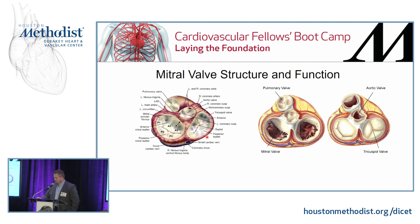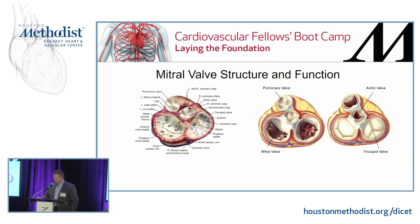This busy slide labels all the anatomy of the mitral, tricuspid, aortic, and pulmonic valves. It shows the names of the cusps of the anterior and posterior leaflets of the mitral valve and their location in the heart: anterolateral commissure, posteromedial commissure, P1/P2/P3, and corresponding A1/A2/A3. There is an intimate association between the left and non-coronary cusp of the aortic valve and the anterior leaflet of the mitral valve via a fibrous ring.